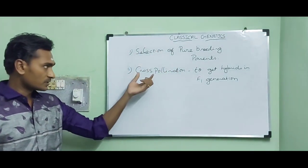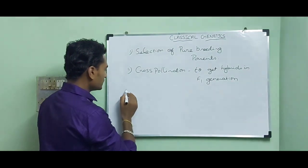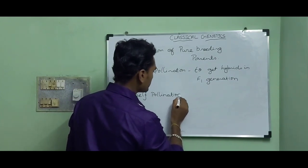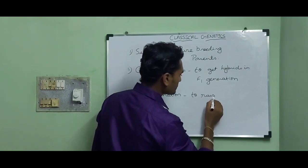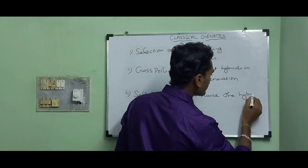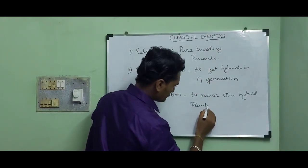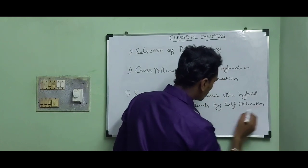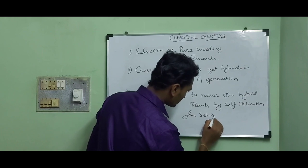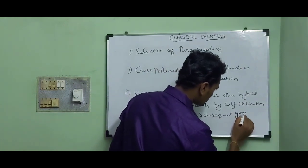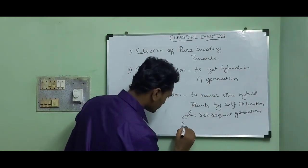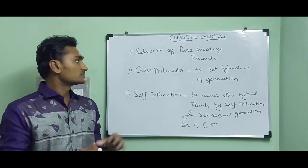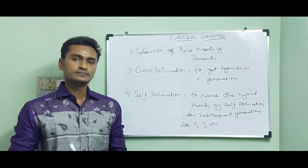Why do we have to do cross-pollination? To get hybrids in F1 generation. The third stage is self-pollination, to raise the hybrid seed plants by self-pollination for subsequent generations like F2, F3, and so on. These are the three stages we have to consider in the hybridization experiment.